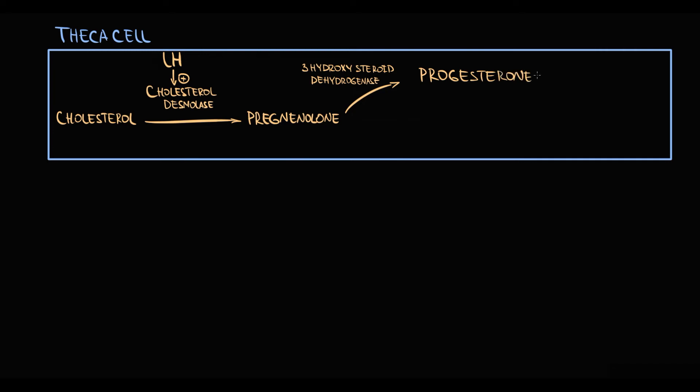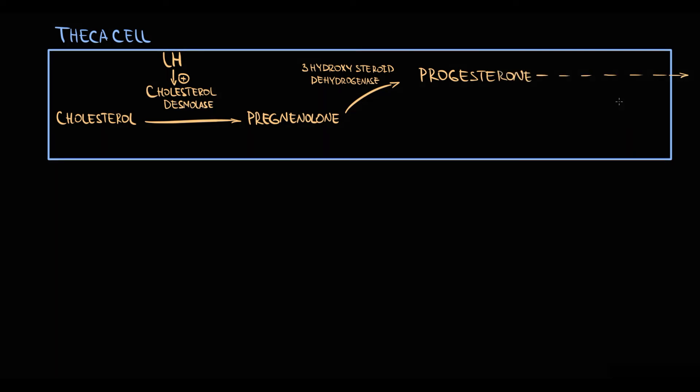Once progesterone is produced, theca cells secrete it into the blood. So the first option is that theca cells can directly produce progesterone from pregnenolone.